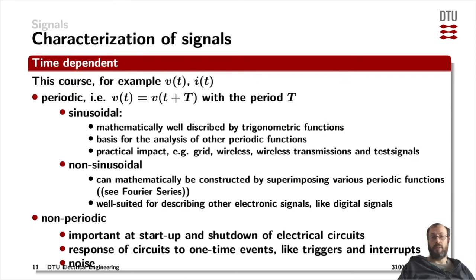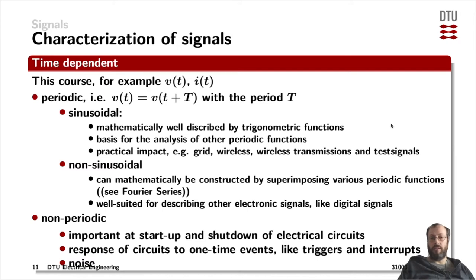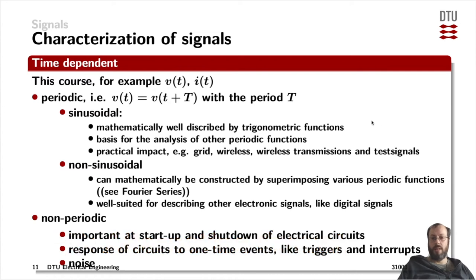Now the other category are time-dependent signals, and that's where it gets more interesting. We can find far more attributes to characterize subcategories of time-dependent signals. The analogy to DC here is AC — alternating current. In this course we're going to focus very much on the time dependency of signals and derived attributes like power and energy, and how circuits behave when you apply time-dependent signals on them.